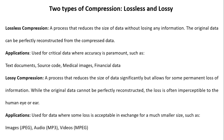Two types of compressions exist: lossless and lossy. Lossless compression is a process that reduces the size of data without losing any information. The original data can be perfectly reconstructed from the compressed data. It is used for critical data where accuracy is very important — for example, text documents, source code, medical images, and financial data.